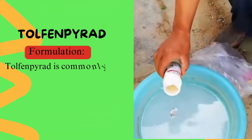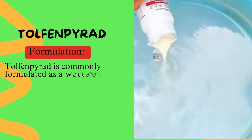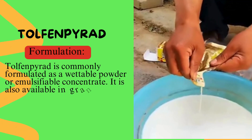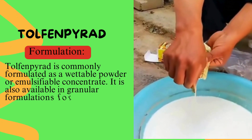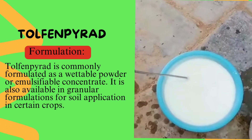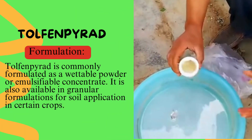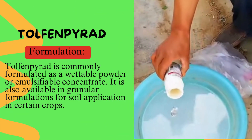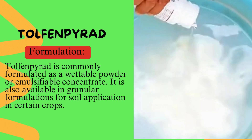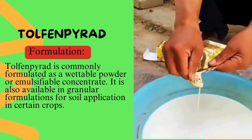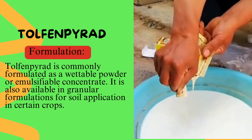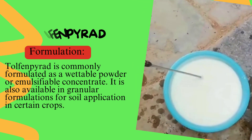Formulation. Tolfanpirad is commonly formulated as a wettable powder or emulsifiable concentrate, allowing for easy mixing with water and application using conventional spraying equipment. It is also available in granular formulations for soil application in certain crops.